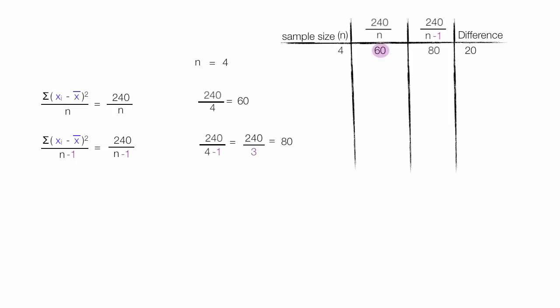So I got 60 without the n-1, and 80 with the n-1. So now let me increase the sample size to 6 and see what happens to these two calculations. 240 divided by 6 is 40, and 240 divided by 6 minus 1, or 240 divided by 5, is equal to 48. So now the difference has dropped to 8.